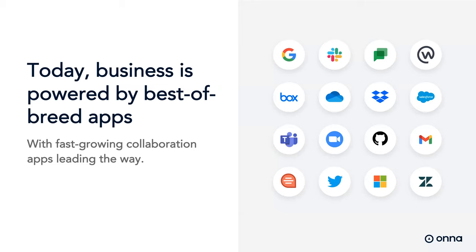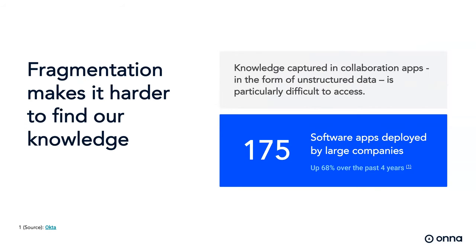Today, business is powered by workplace applications with collaboration and communication tools leading the way. The adoption of applications like Google Workplace, Slack, Salesforce, and Dropbox have all grown tremendously in the past few years, accelerated over the last 15 months by the global pandemic. This is creating new challenges for enterprises, not least in terms of privacy and information governance. In the past four years, the average organization has deployed 175 applications — an increase of over 68% from the same time period prior.